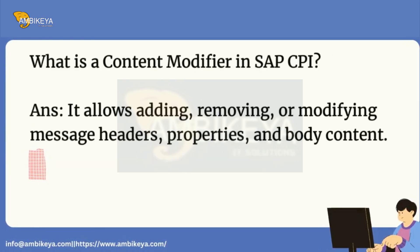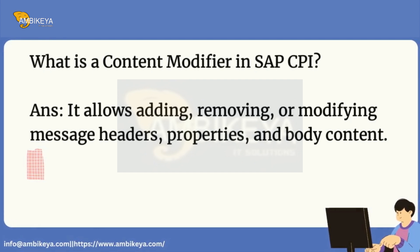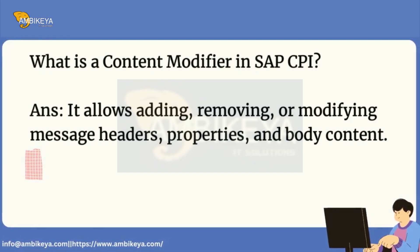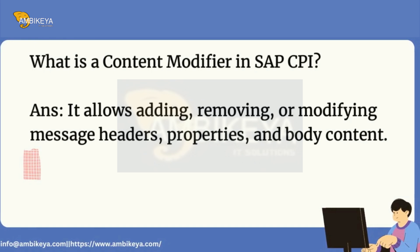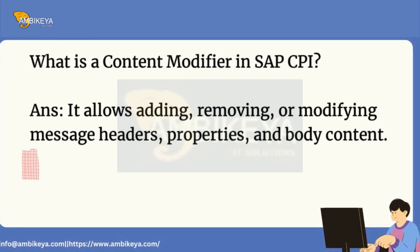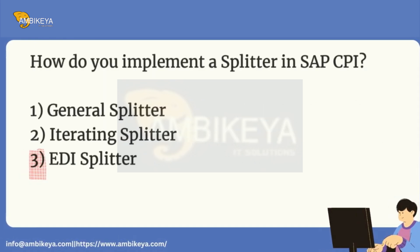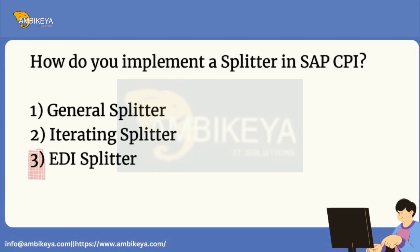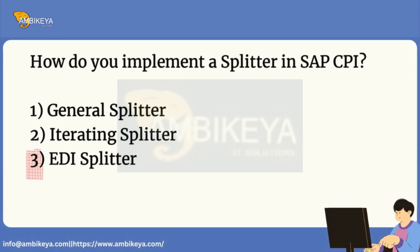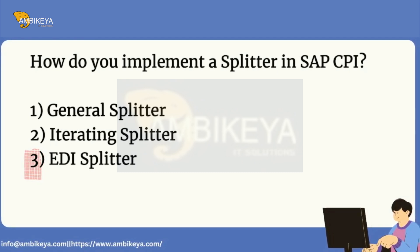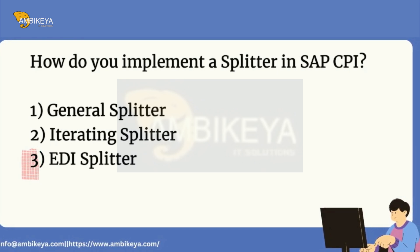What is a content modifier in SAP CPI? It allows adding, removing, or modifying message headers, properties, and body content. How do you implement a splitter in SAP CPI? 1. General splitter, 2. Iterating splitter, 3. EDI splitter.